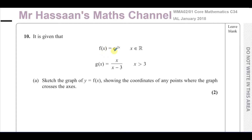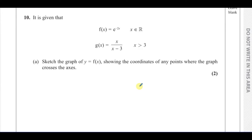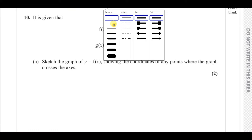You're told that f(x) equals e to the power of negative 2x, with the domain x is a member of all the real numbers, and g(x) equals x over x minus 3, where x is greater than 3 — that is the domain of this function. We've got to sketch the graph of y equals f(x), showing the coordinates of any points where the graph crosses the axes. So here we have an exponential graph — the exponential function.